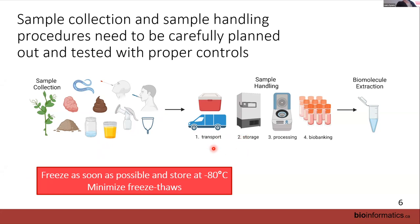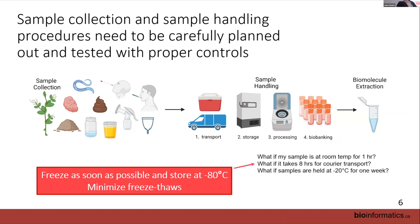Sample handling really has four components: transport, storage, processing, and then biobanking or archival. In all of these you can introduce bias and you can't go back. Then you need to extract the biomolecules you're interested in. Sometimes mitigating factors come up — your plan is to freeze as soon as possible, store at minus 80, and minimize freeze-thaws.